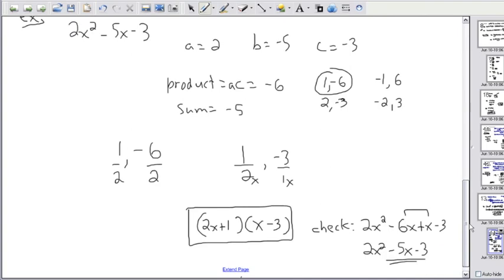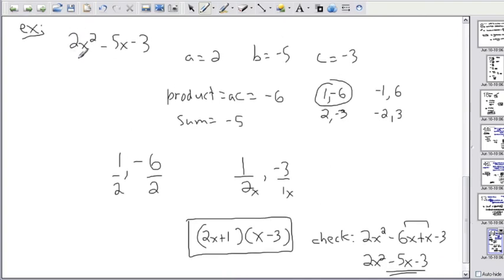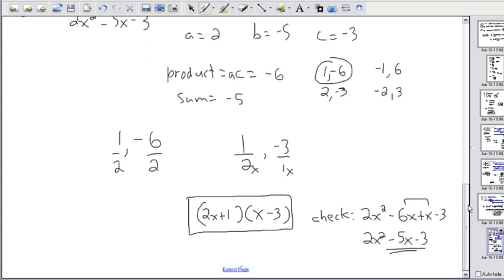So is it supposed to be 2x squared minus 5x minus 3? Sure is. So that's how I know I did it right. You can always check if you did it right.